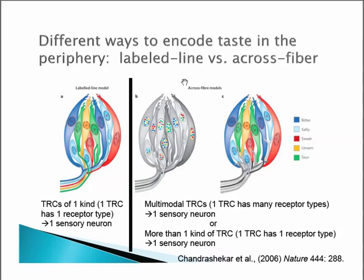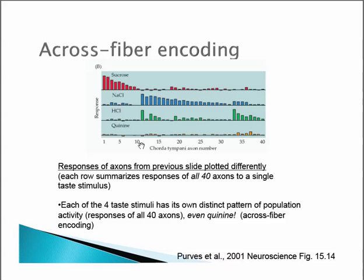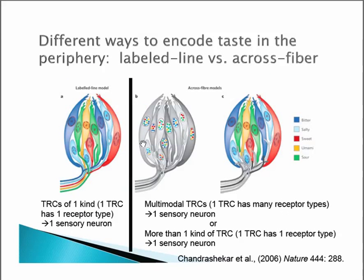Conversely, if you look at cross fiber models, there are possibly two ways. First, there are multimodal taste receptor cells that express more than one kind of taste receptor. So one taste receptor cell has many different taste receptors, and this taste receptor cell synapses onto one of these axons. What you might see then for a firing pattern — looking at axon number 11, for example — is that it responds to hydrochloric acid and also sodium chloride, because it has many different taste receptors.